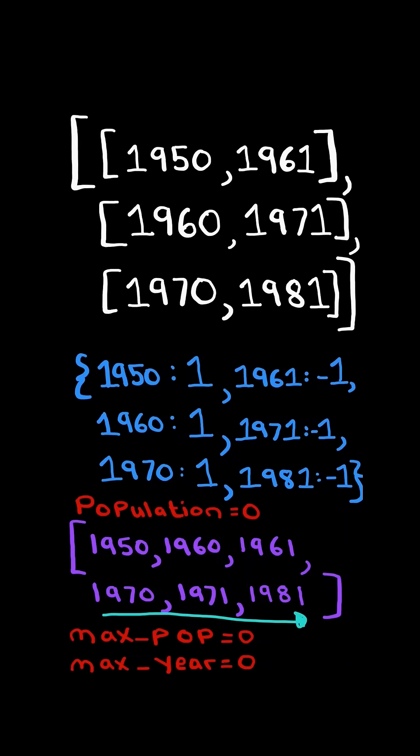We iterate through the list and check the value in the hash map, adding it to the population. If the population is greater than max population, we update max population and max year.